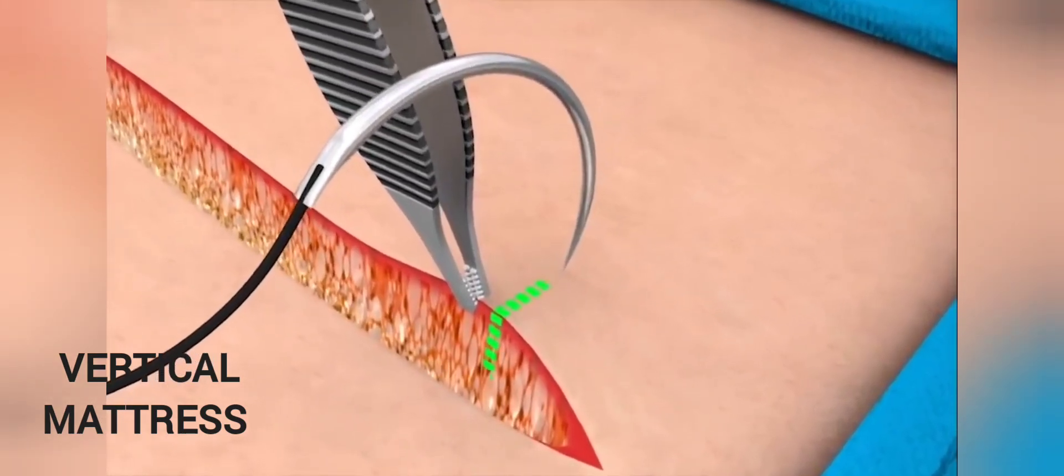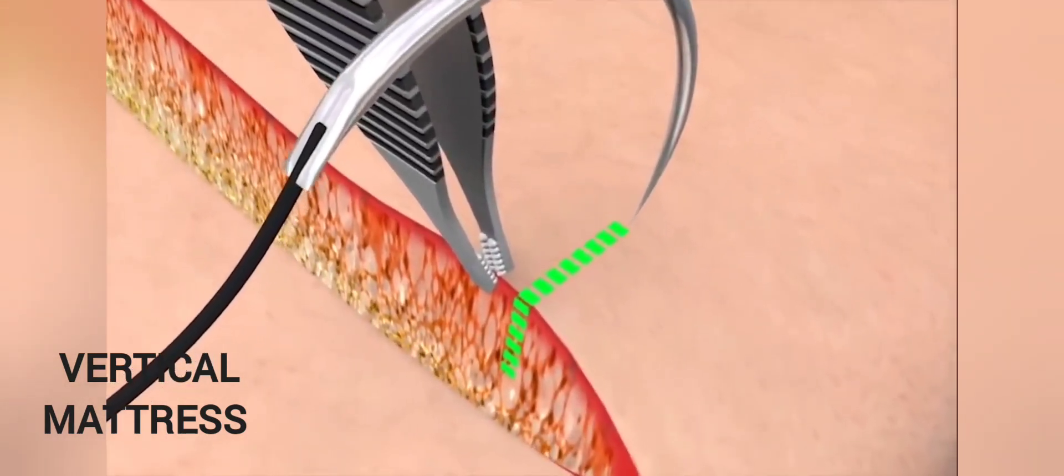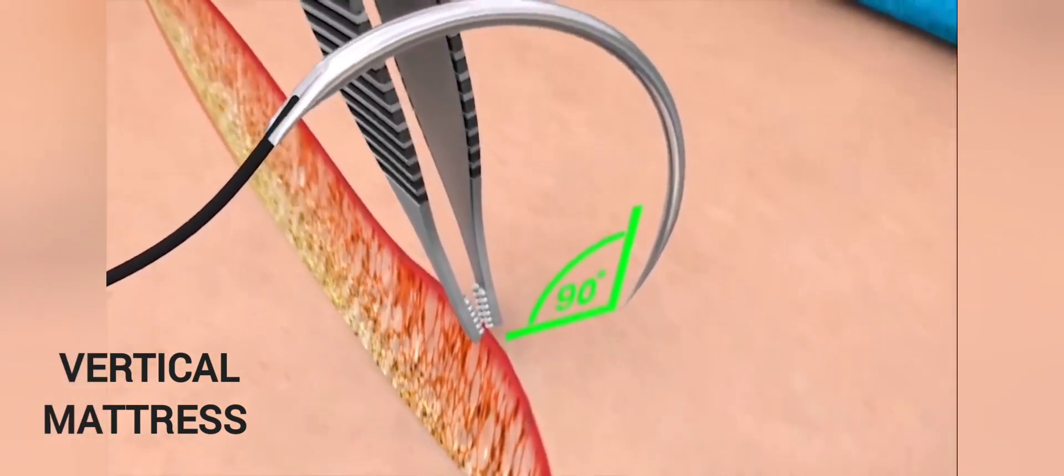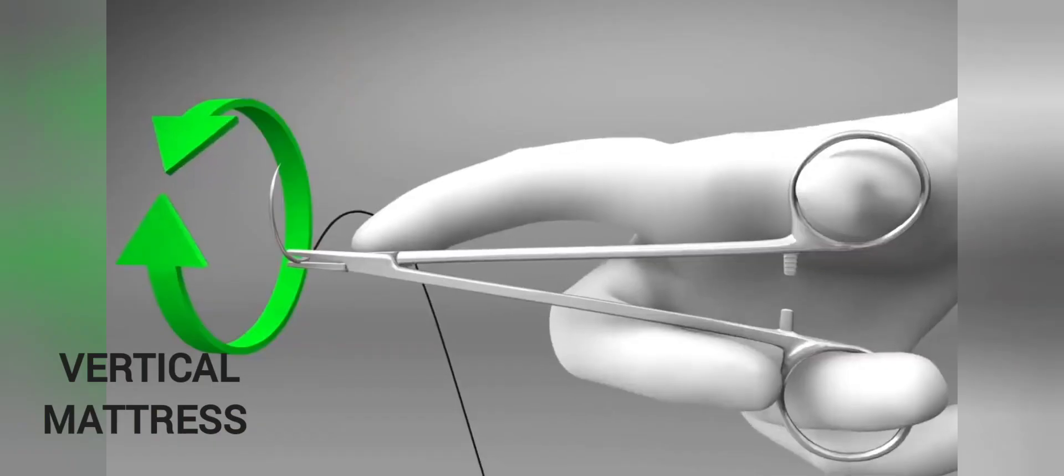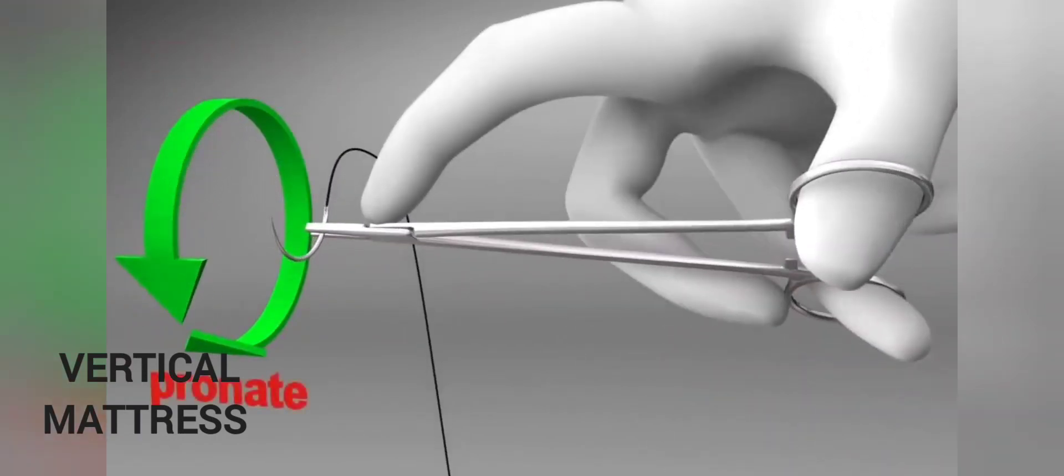Take a slightly larger bite than normal to start the vertical mattress suture. Insert the needle with the point at 90 degrees to the skin. Rotate the needle smoothly through the skin by supinating the forearm.